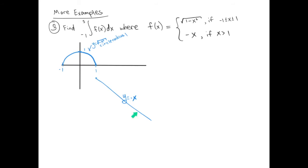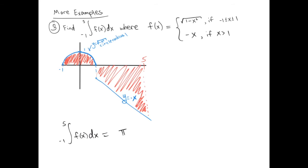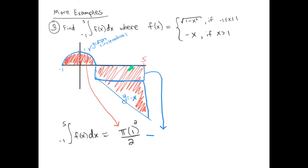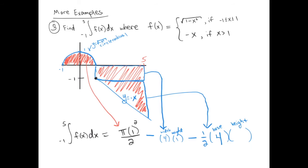We're looking for the area between the function and the x-axis from x equals negative 1 to x equals 5. From negative 1 to 1, we have a semicircle, giving pi r squared over 2. From x equals 1 to x equals 5, we break it into a rectangle stacked on a triangle. The rectangle has width 4 and height 1, giving area 4. The triangle is below the x-axis (counted as negative), with base 4 and height 4, since y equals negative x gives a y-value of negative 4 at x equals 5.